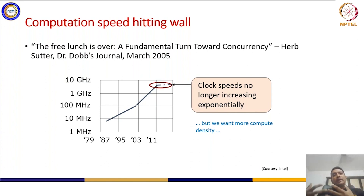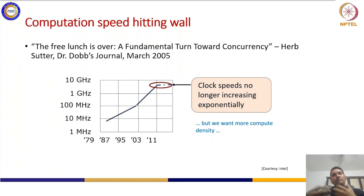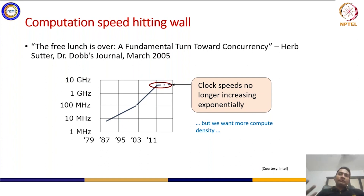So how do you get much more compute density? In terms of speed, we want to increase the density as well as the computation engine, because you have to have the flexibility of including more number of transistors in a chip. In terms of clock speed also, you cannot increase the clock speed anymore, so compute density you cannot increase after a certain limit.